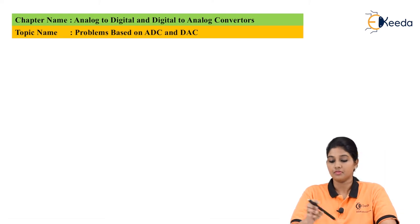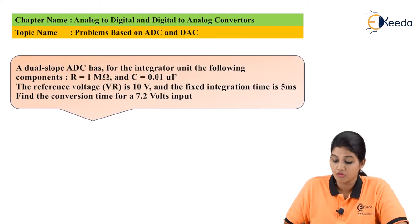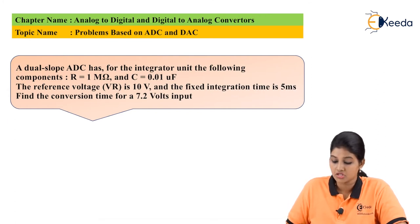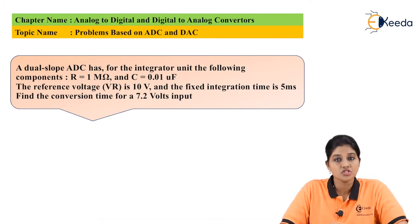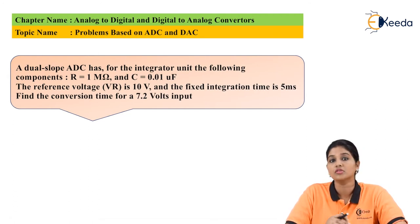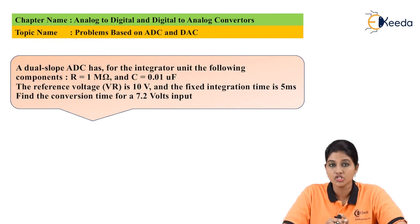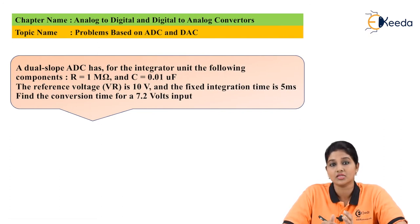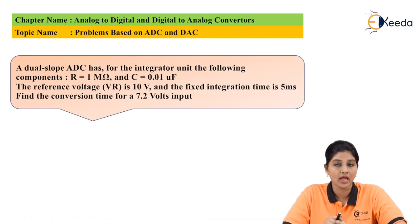Now let's see the problems based on designing of ADC and DAC. The statement of problem 1: for a dual slope ADC the integrator unit has the following components — R equals 1 mega ohm, C equals 0.01 microfarad, the reference voltage VR is 10 volt, and the fixed integration time is 5 milliseconds. Find the conversion time for 7.2 volts input. The conversion time is the time required for conversion of a signal from analog to digital form. It determines the speed of operation of ADC or DAC, and ideally should be as small as possible.